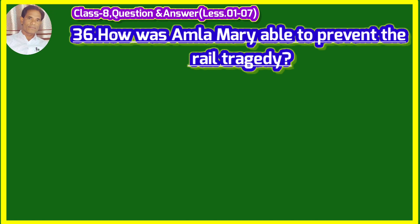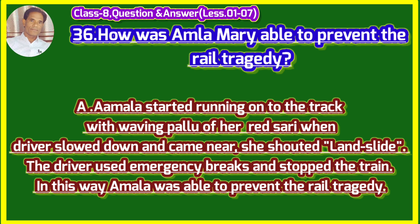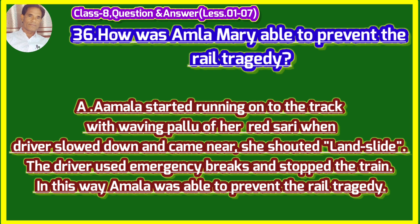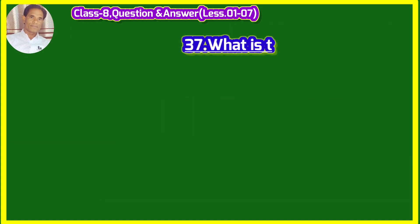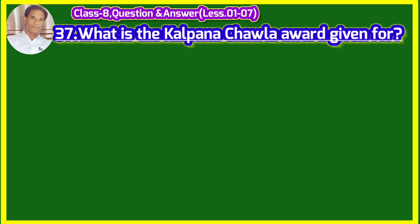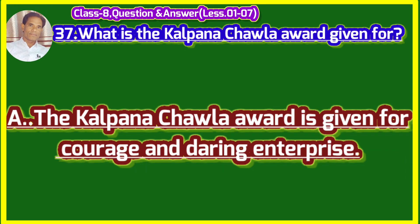How was Amla Mary able to prevent the rail tragedy? (Amla Mary rail durghatna rokne mein kaise safal hui?) Amla started running onto the track waving the pallu of her red sari. When the driver slowed down and came near, she shouted 'landslide.' The driver used emergency brakes and stopped the train. In this way Amla was able to prevent the rail tragedy. Amla apni lal sadi ka pallu lahraate hue patri par daurne lagi. Jab chalak ne gati dhimi ki aur paas aaya, vah chilayi — landslide. Chalak ne apadkalin break lagai aur rail rok li. What is the Kalpana Chawla Award given for? (Kalpana Chawla Puraskar kisliye diya jata hai?) The Kalpana Chawla Award is given for courage and daring acts. Kalpana Chawla Puraskar sahas aur sahsi kary ke liye diya jata hai.